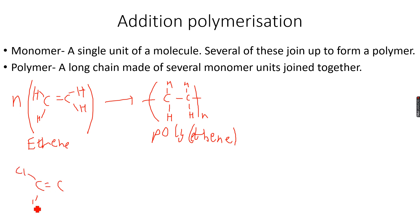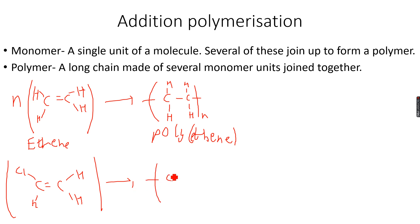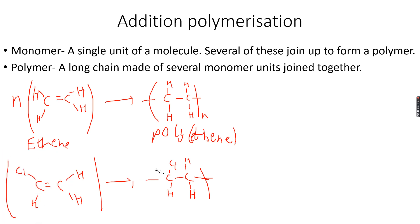We can have a monomer where there is a chlorine atom. When this polymerizes, we get a polymer with this repeat unit. If you have to draw several repeat units, we start again from here and keep repeating it.